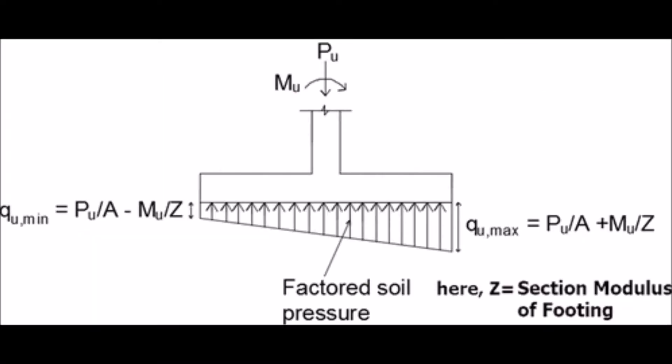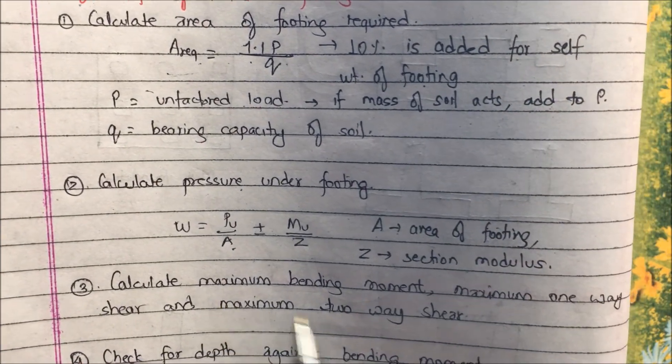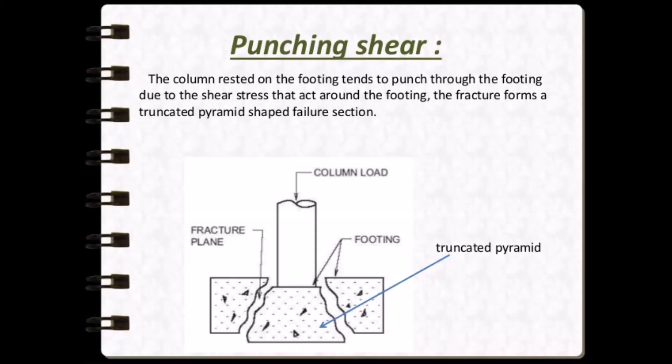For consideration of moment, the two ends of the footing will have two different pressures — one will be the minimum and another will be the maximum, which is the factored soil pressure. Another step is to calculate maximum bending moment, maximum one-way shear, and maximum two-way shear. The two-way shear produces a punching effect, that is, the punching shear.